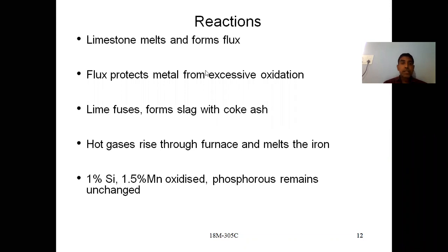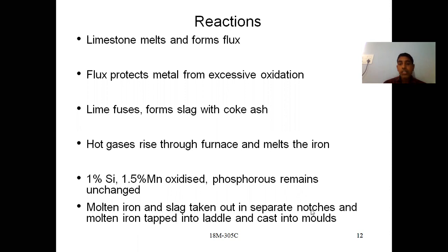Reactions in the cupola: Limestone melts and acts as flux, reacting with impurities to form slag and protecting the metal from excessive oxidation. Lime fuses with coke ash to form slag. Hot gases rise and melt the iron. About 1% of silicon and 1.5% of manganese are oxidized; phosphorus remains unchanged. Molten iron and slag are removed through separate notches; molten iron is tapped into a ladle and cast into molds.